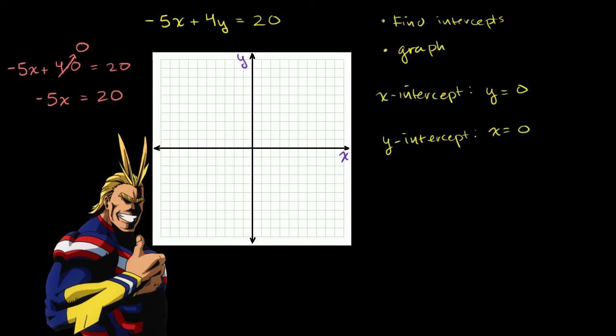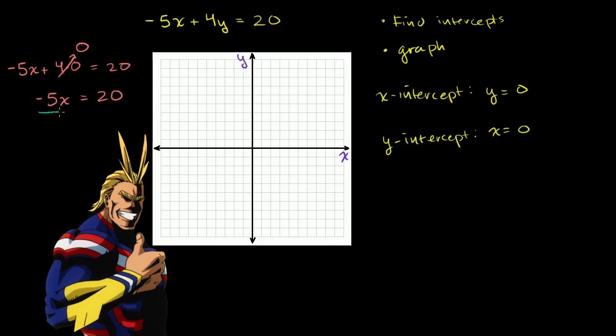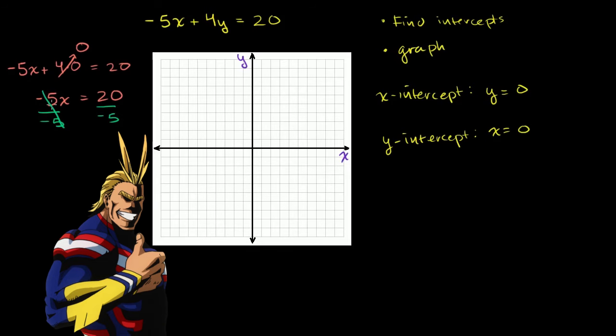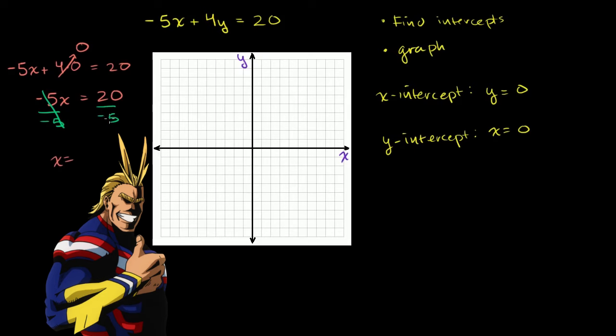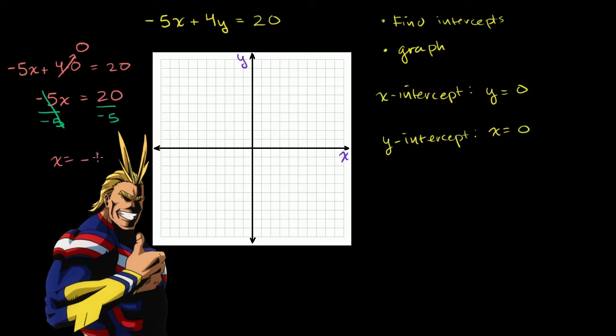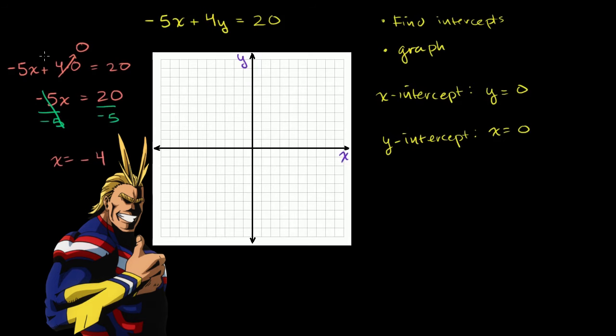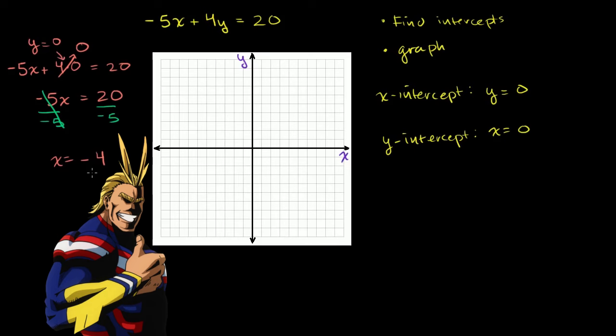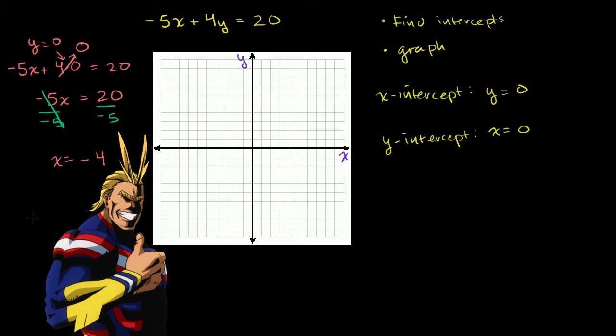We can divide both sides of this equation by -5. The -5s cancel out. That was the whole point behind dividing by -5. And we get x is equal to 20 divided by -5, which is -4. So when y is equal to 0, x is equal to -4. Or if we wanted to plot that point, we always put the x-coordinate first. So that would be the point (-4, 0).